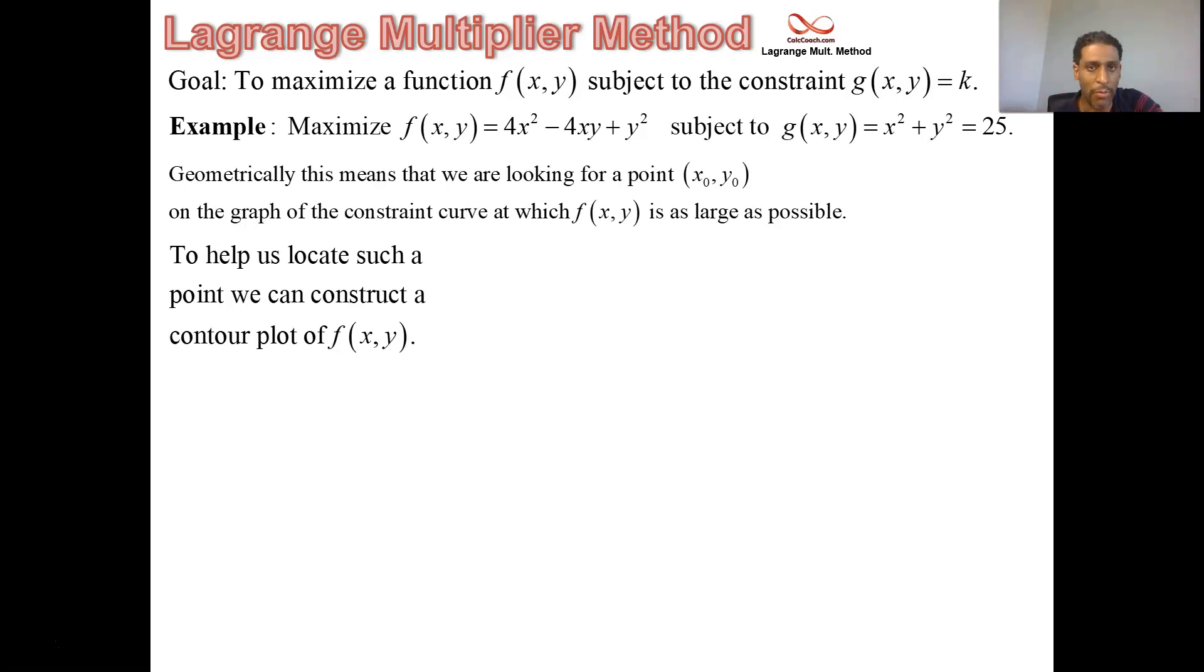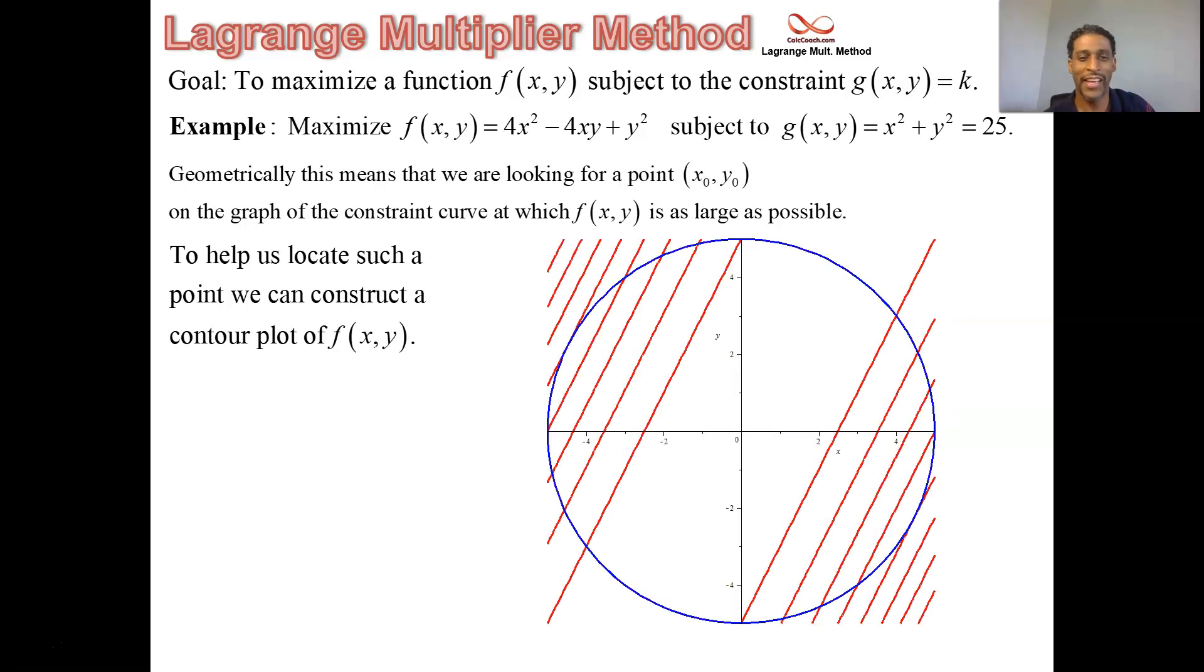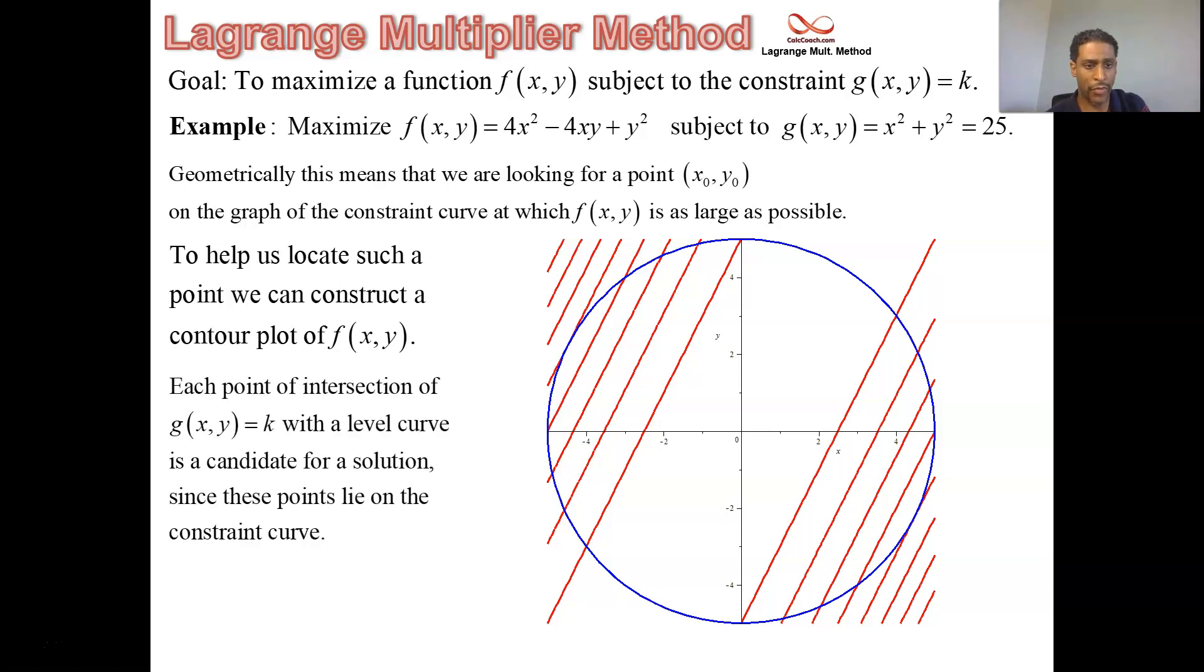When you collapse them all down to the xy plane, that is called a contour map. And this is a view of this particular example's contour map. The constraint is in blue, the level curves are in red, and they stand for different altitudes for your function.